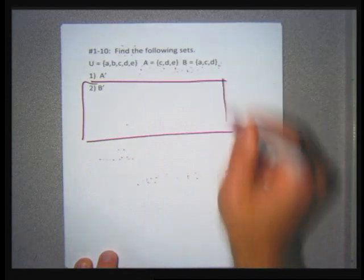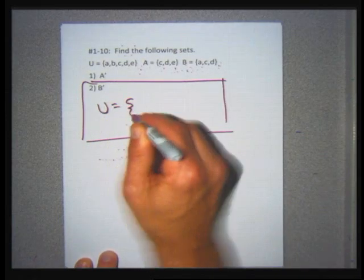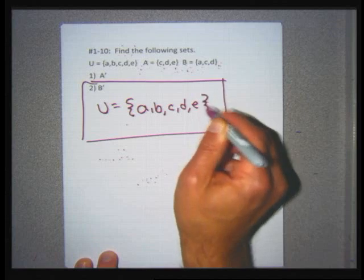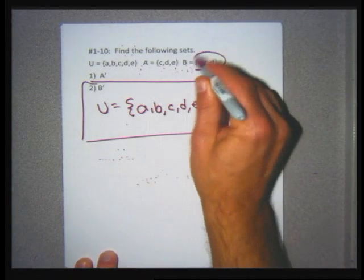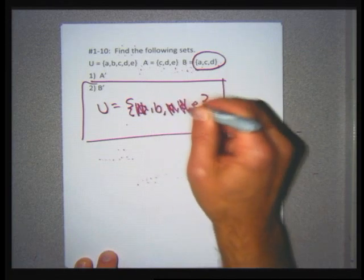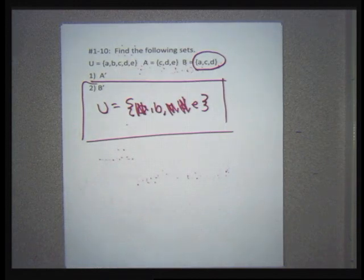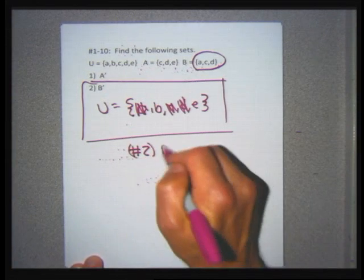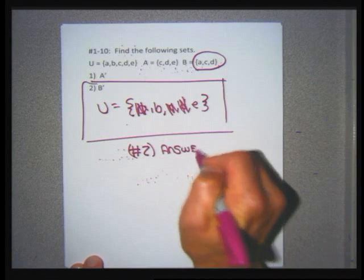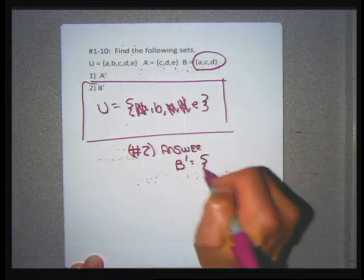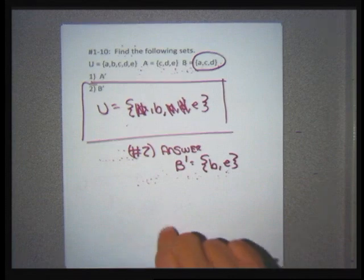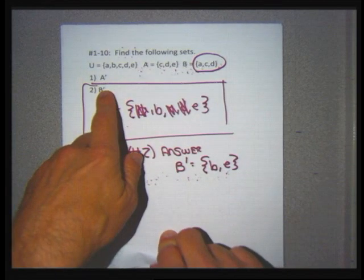Problem two wants me to find B prime. The universe for this problem has elements A, B, C, D, E. I need to strike A, C, and D from the universe because that's what B has. When I remove the three elements of B from the universe, I'm left with B prime. So B prime equals the set {B, E}. Complements are the easiest — sometimes I read the symbol as 'prime' and some books call it that.